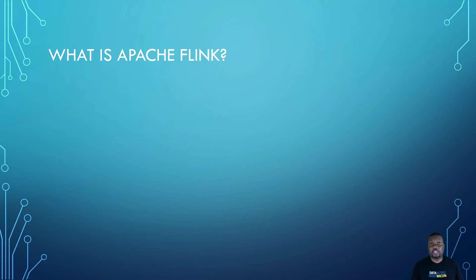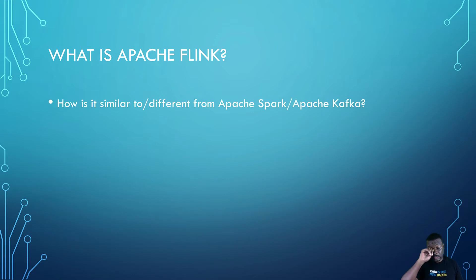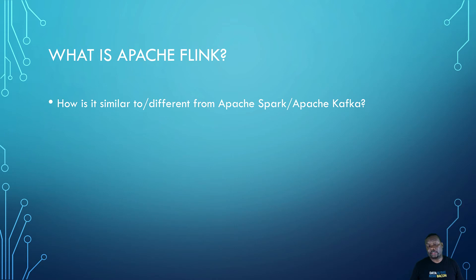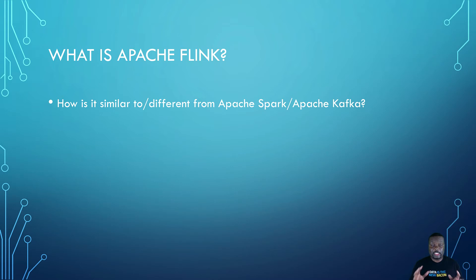Apache Flink is an open source project managed by the Apache Software Foundation. It has similarities and differences compared to popular projects like Apache Spark and Apache Kafka. Apache Spark is primarily used for batch processing — when you have a lot of data and want to process it all at one time. Sometimes Spark is discussed as having real-time capabilities, but it is actually micro-batching and is not, in my perspective, real-time streaming. Apache Flink allows you to do batch processing, similar to Spark.